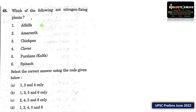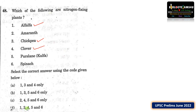Which one of the following are nitrogen fixing plants? Options: 1 — Alfalfa, 2 — Amaranth, 3 — Chickpea, 4 — Clover, 5 — Pursulane, 6 — Spinach. Nitrogen fixing capacity in plants is carried out by members of the family Leguminosae. Chickpea, Alfalfa, and Clover all belong to the legume family, while Amaranth belongs to Amaranthaceae. So the correct options are 1, 3 and 4.